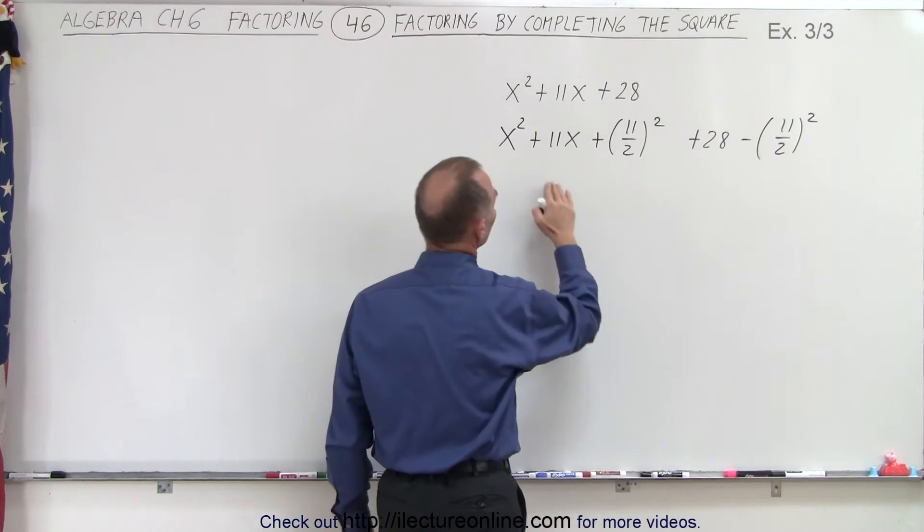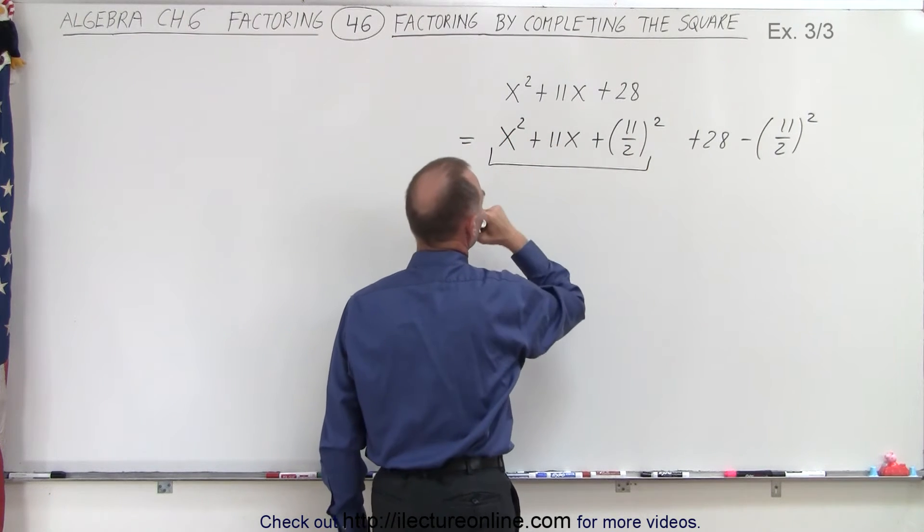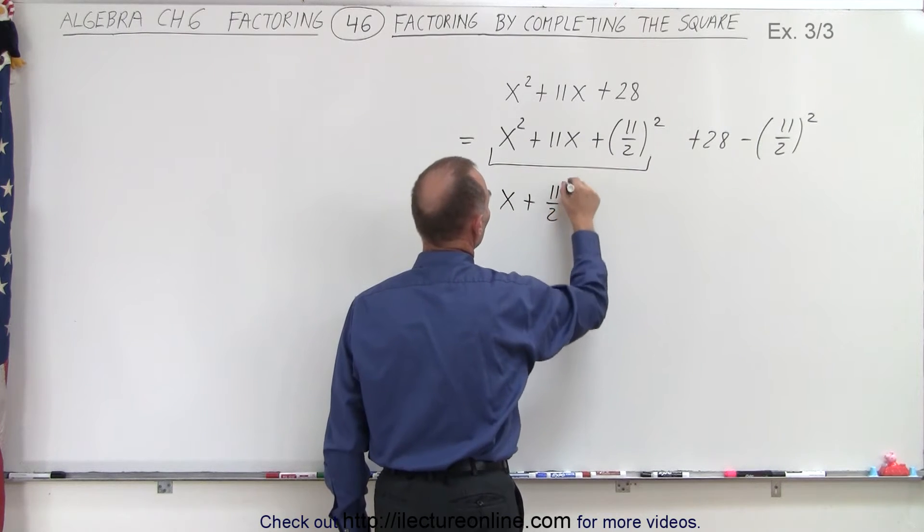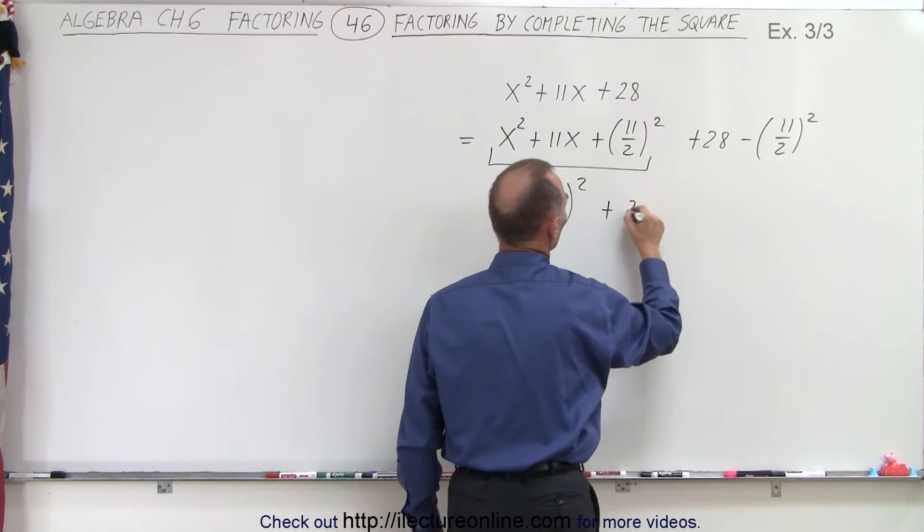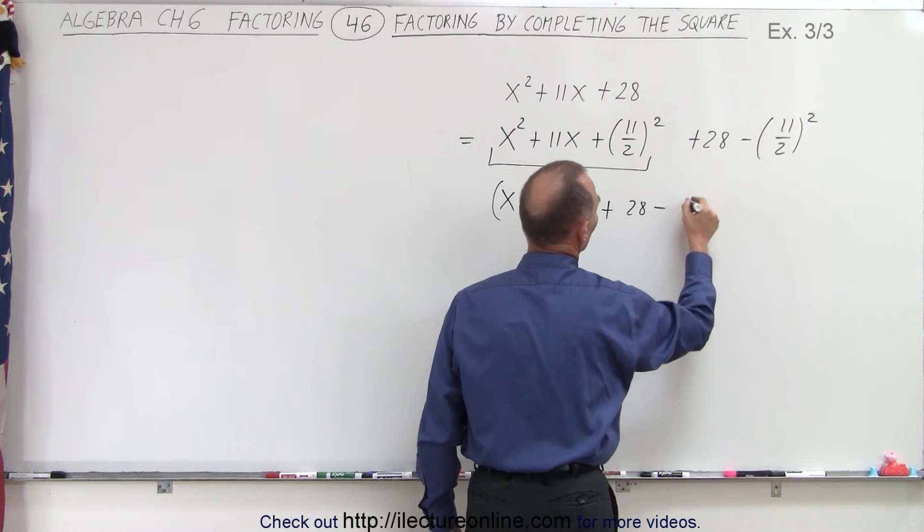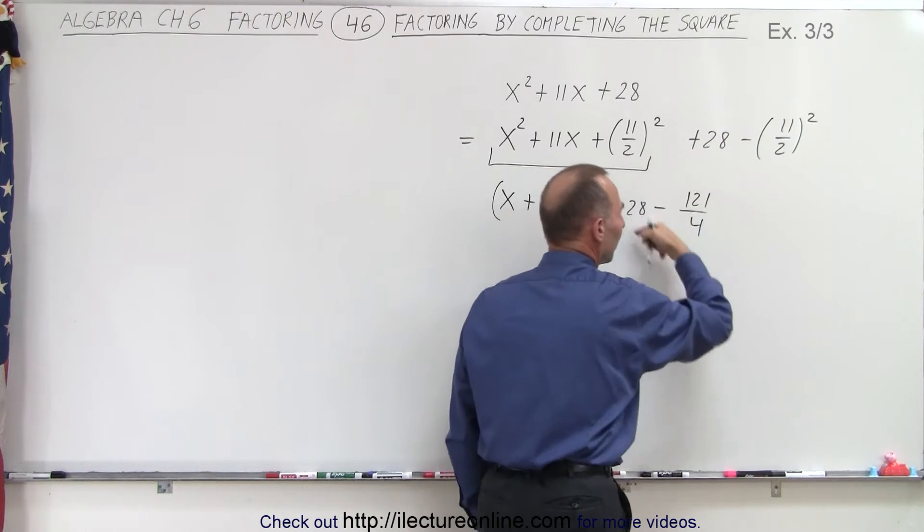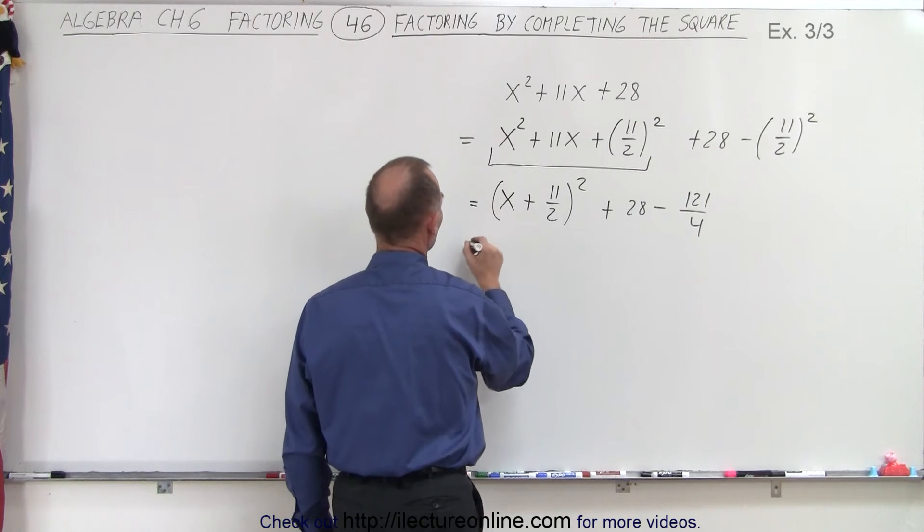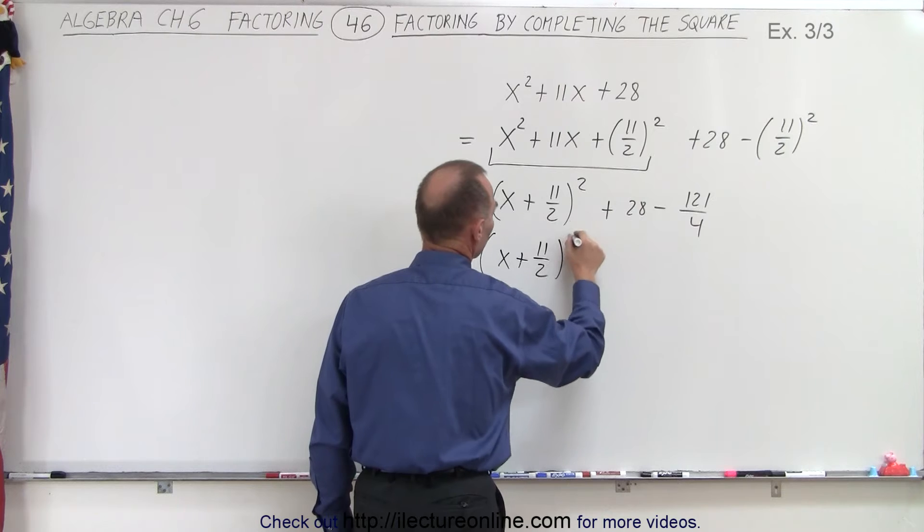All right, so now we're going to go ahead and factor this form. So this can be written as x plus 11 over 2 quantity squared. And over here, we end up with plus 28 and then minus 121 over 4. Now we need to somehow combine these two numbers by finding the lowest common denominator.